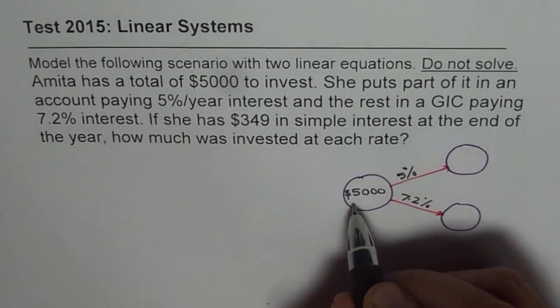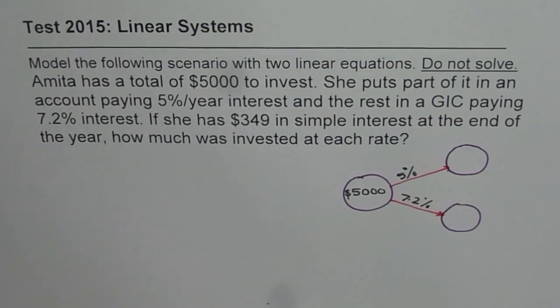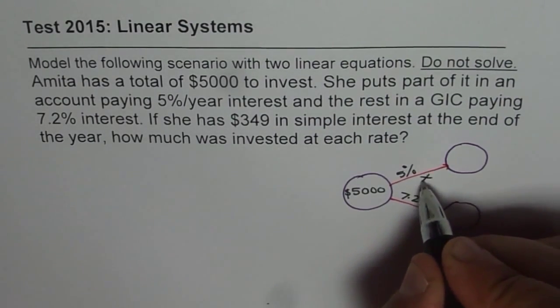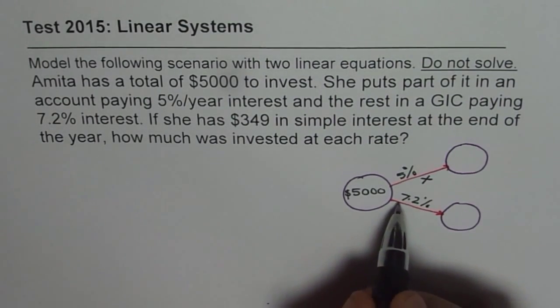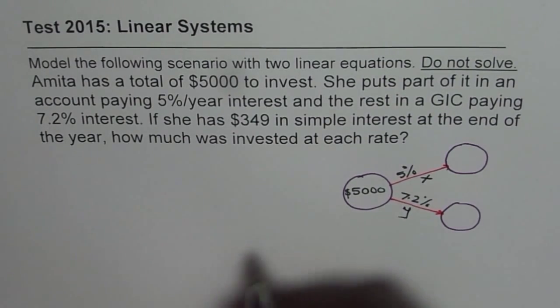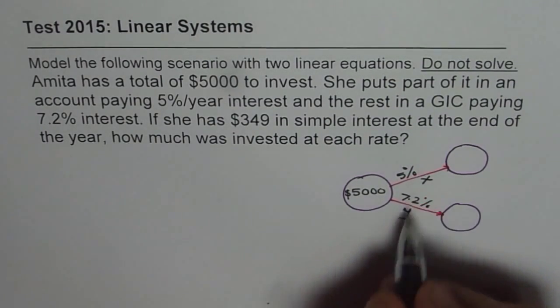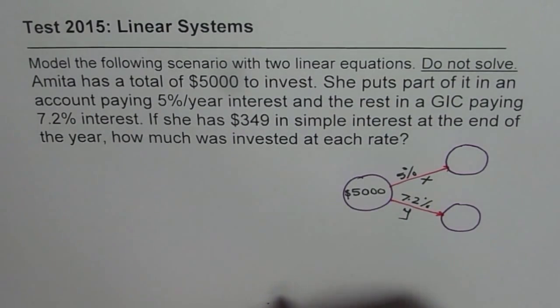So the amount invested at 5% interest, let that be X and at 7.2% interest be Y. These are the two variables. So definitely X plus Y is 5000. So define your variables first.